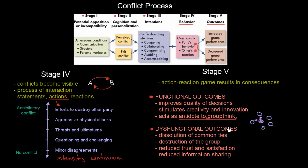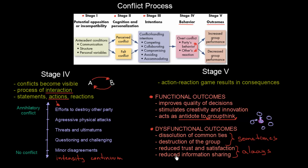There are also dysfunctional outcomes. Researchers have concluded that conflict sometimes leads to a dissolution of common ties and destruction of the group. More importantly, it always leads to reduced trust and satisfaction among the two parties involved in the conflict, and reduced willingness or reduced information sharing. As you can see, conflict can be understood within this model, and it ends in these two final stages: the behavior stage and the outcome stage.